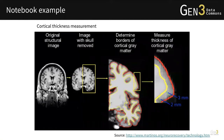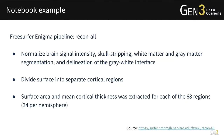Here are the steps to measure cortical thickness. From the original structural image, the skull is removed. The border of the cortical gray matter is then delineated and the thickness of the cortical gray matter is measured. The thickness of each cortical region is averaged. We implemented the FreeSurfer Enigma pipeline for cortical thickness measurements using the recon-all command. There are three steps: first, it normalizes brain signal intensity, performs skull stripping, white matter and gray matter segmentation, and delineation of the gray-white interface. Second, the surface is divided into separate cortical regions. Lastly, the surface area and mean cortical thickness are extracted for each of the 68 regions — 34 per hemisphere.